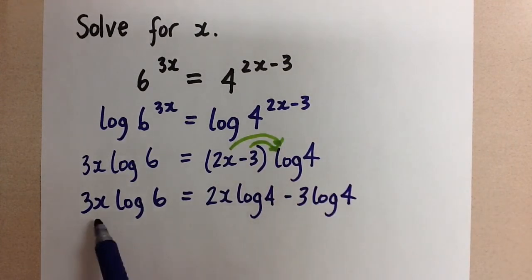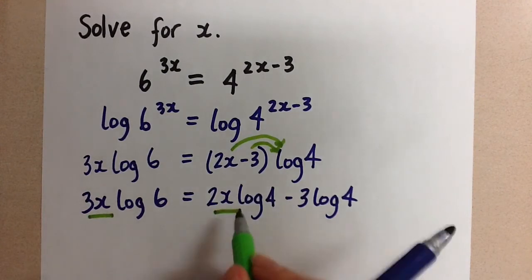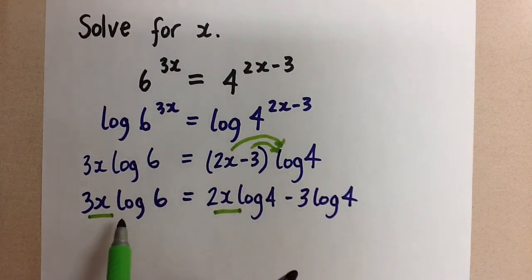You can see that we have an x term here and an x term here. So we have to get these two terms on the same side so we can solve for that x variable.